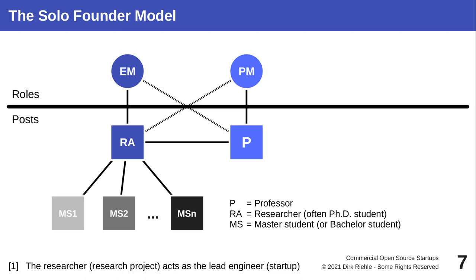The engineering manager focuses on the product and software and managing that process, while the product manager focuses on what is needed — true both in research and for a startup. As the engineering manager, you have the technical responsibility, so you are also the chief architect for the software being developed. In this illustration, you can see the roles of engineering management and product management as they apply to being a research associate or professor at a university, where the research associate works with master's students who may be interested in joining the startup.